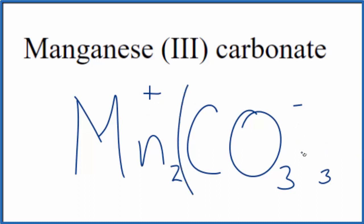Then we need to put parentheses around the carbonate ion and remove the charges. And this is the formula for manganese 3 carbonate, Mn2(CO3)3.